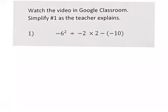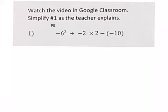We're going to simplify expressions using order of operations. What makes this a little different is that we now have integers — positive and negative numbers. If you recall, the order of operations is PEMDAS: P stands for parentheses, then exponents, then multiplication and division left to right in the order it appears, and then addition and subtraction in the order it appears left to right.